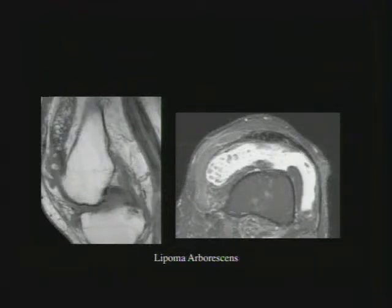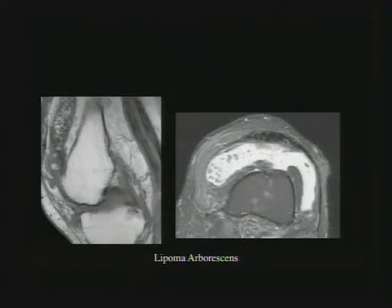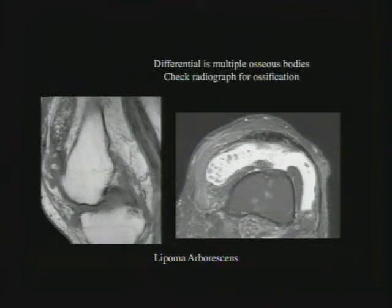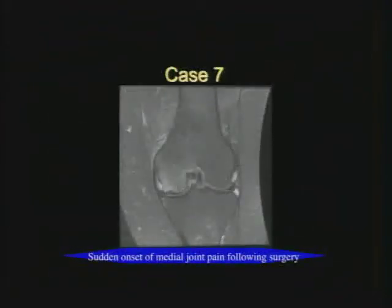Lipoma arborescens is something everybody needs to know — it's classic even if not common. Bodies should show up on radiograph as bony structures; lipoma arborescens shows nothing or little fat globules; a fracture would be obvious. This condition occurs when the synovium goes wild and makes fat, seen commonly in people with rheumatoid arthritis or OA, though I've seen it in children. Treatment is synovectomy. There's always a large effusion, and it can occur in any bursa — shoulder bursa, iliopsoas bursa.